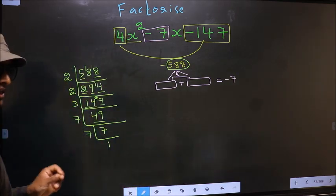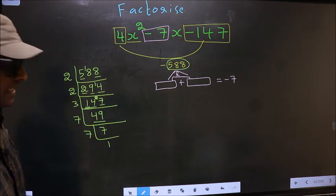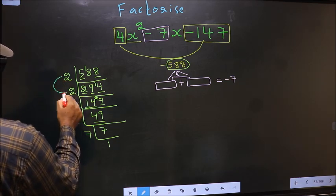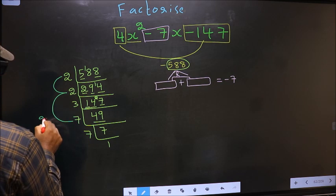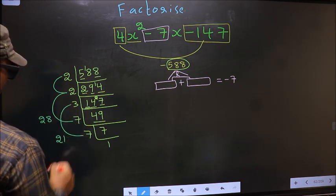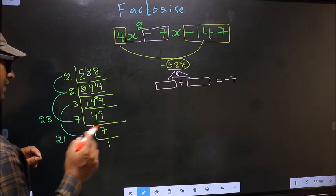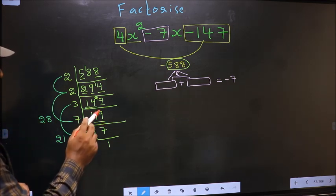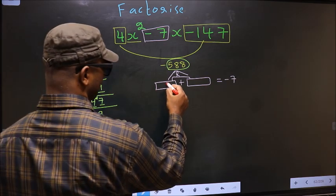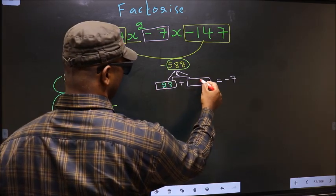Now the two numbers should be 2×2 = 4, ×7 = 28. And the second number is 3×7 = 21. 28 - 21 = 7. 28×21 = 588. So here you write 28 and here 21.